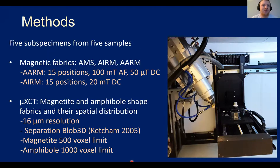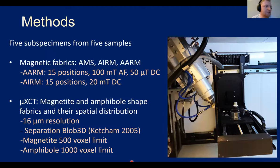Analyzing distribution anisotropy and shape fabrics can be quite time-consuming because you need CT or X-ray tomography, and the separation method takes a long time. So we chose five specimens from five samples — not a huge dataset, but a large amount of data comes out. These samples were analyzed for AMS, anisotropy of isothermal remanent magnetization (AIRM), and anisotropy of anhysteretic remanent magnetization (AARM).